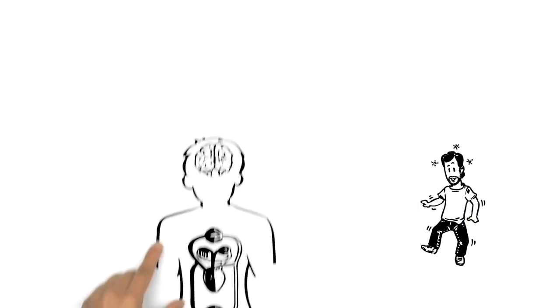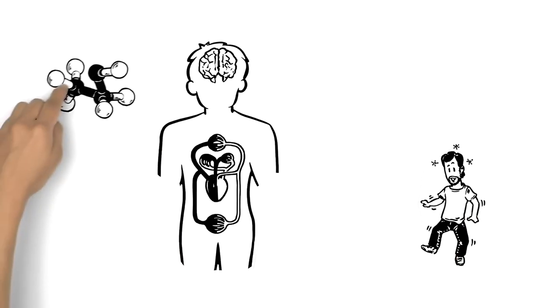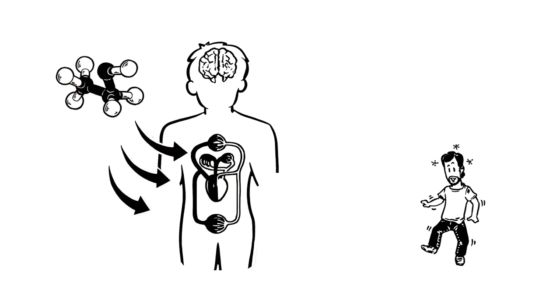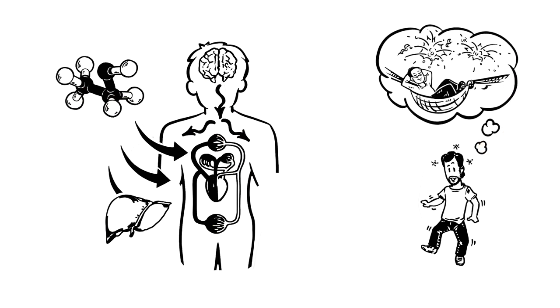The intoxicating effects of alcohol are caused by ethanol entering the bloodstream faster than the liver can break it down, thus changing the signals sent from the brain to other parts of the body. This causes the euphoric and relaxed experience of being drunk, but it also has its risks.